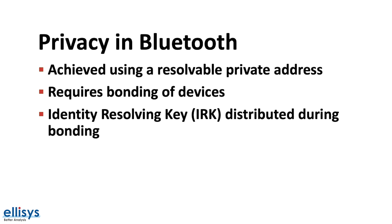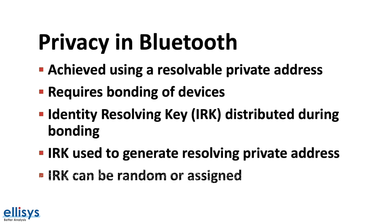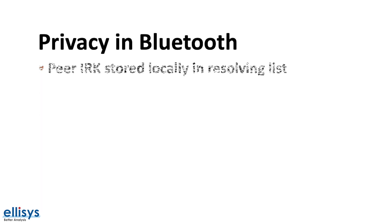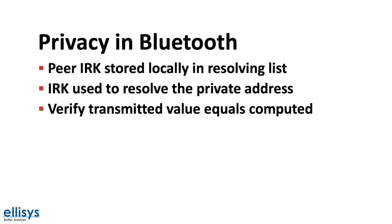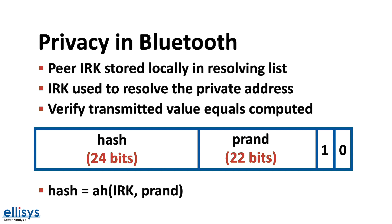A key referred to as the IRK (identity resolving key) is used in generating and resolving the resolvable private address. The IRK generated by each device locally is either chosen at random or assigned during manufacturing. During bonding, each device stores its peer's IRK in what's called a resolving list. The IRK is then used to resolve the private address of a peer device when receiving its advertising packets. This is done by verifying that the hash included in the private address matches the output of a local hash computation. Since the device has the IRK stored locally and has access to the PRAND included in the BLE packets, it can perform this computation. It's important to note that the IRK is not used to reveal the peer's identity address — which is either a public or random static address — but rather for verification purposes only.